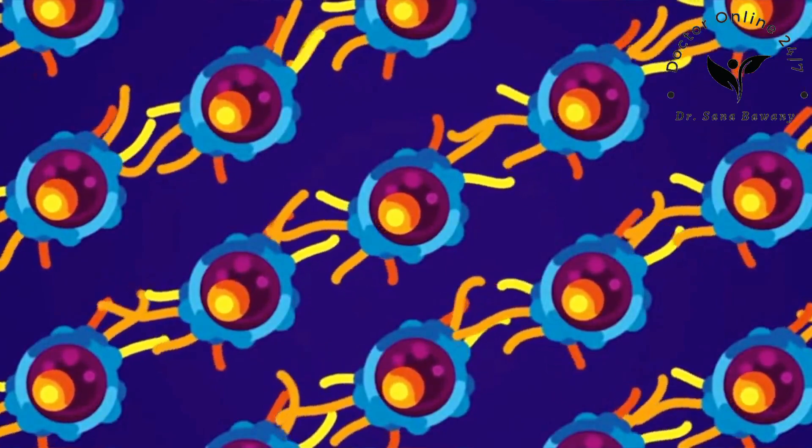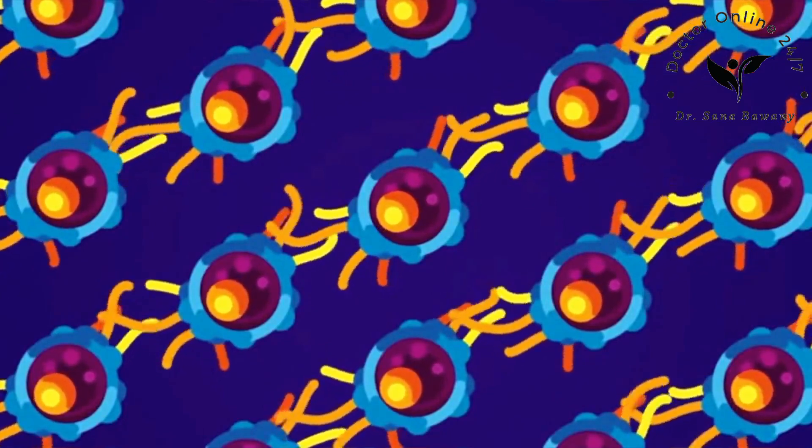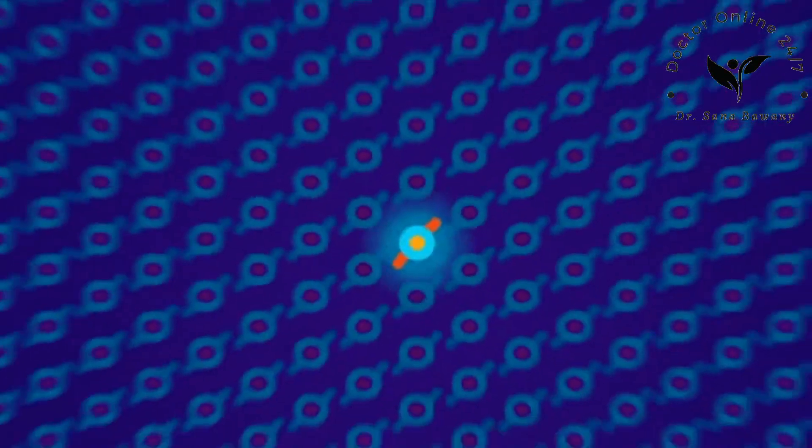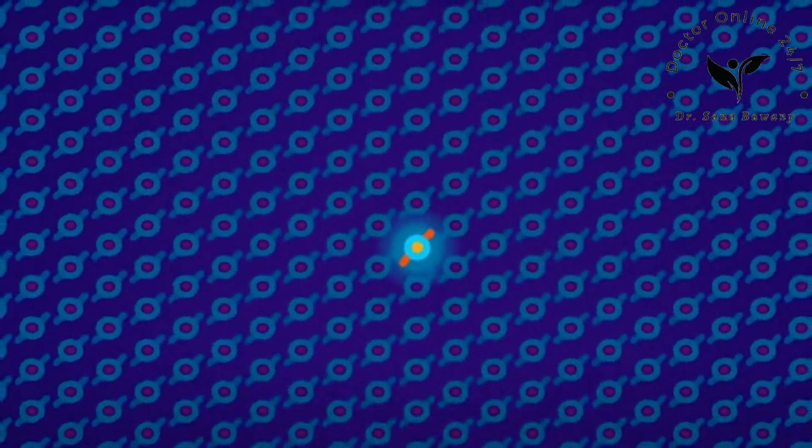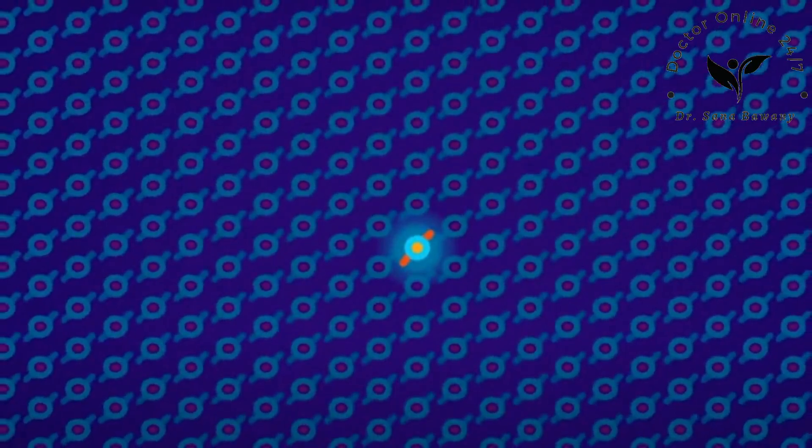One that happens to have just the right weapon for the bacteria that infected your wound. So it goes around and rubs itself, still covered in bacteria parts, against every helper T cell it meets.